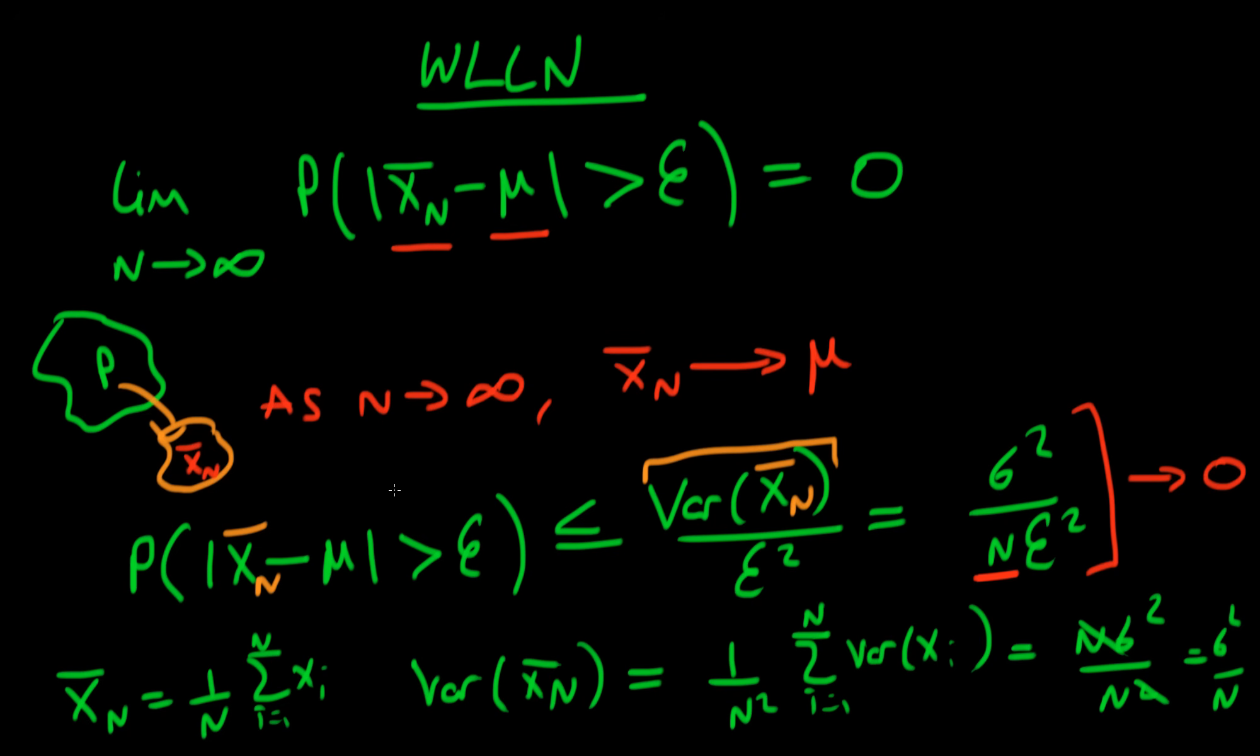So we proved the weak law of large numbers because we have shown that the probability that x̄ₙ differs from the population mean μ by some amount in absolute value which is greater than ε has to be less than or equal to, in this case in the limit that n tends to infinity, zero. And there's no way it can be less than zero, so we have shown that the probability of x̄ₙ differing from the population mean μ by some amount which is greater than ε in absolute value has to in fact be equal to zero in the limit that n tends to infinity.